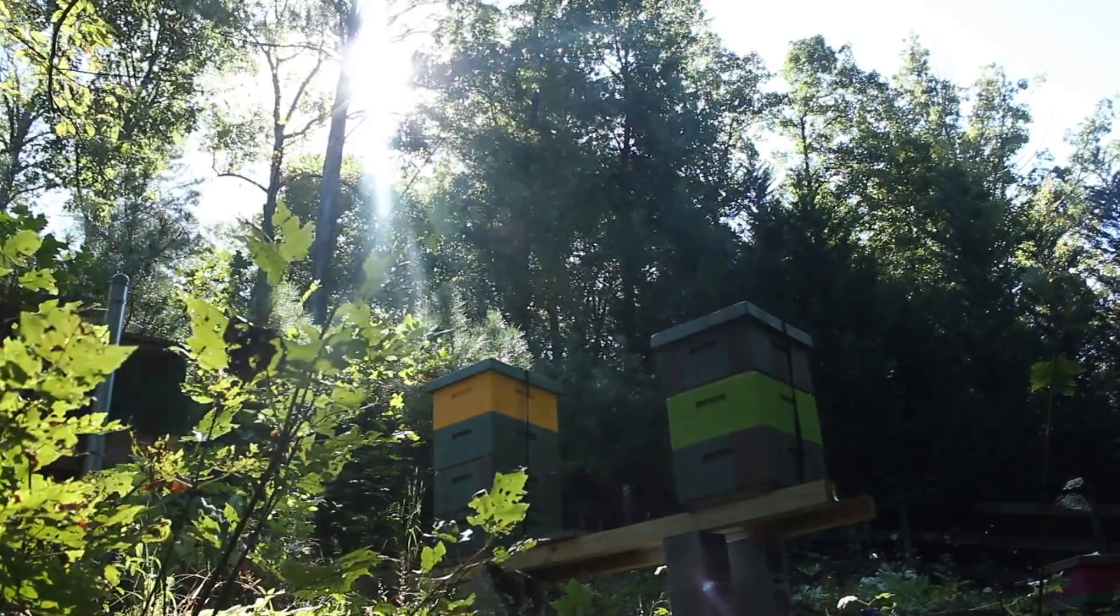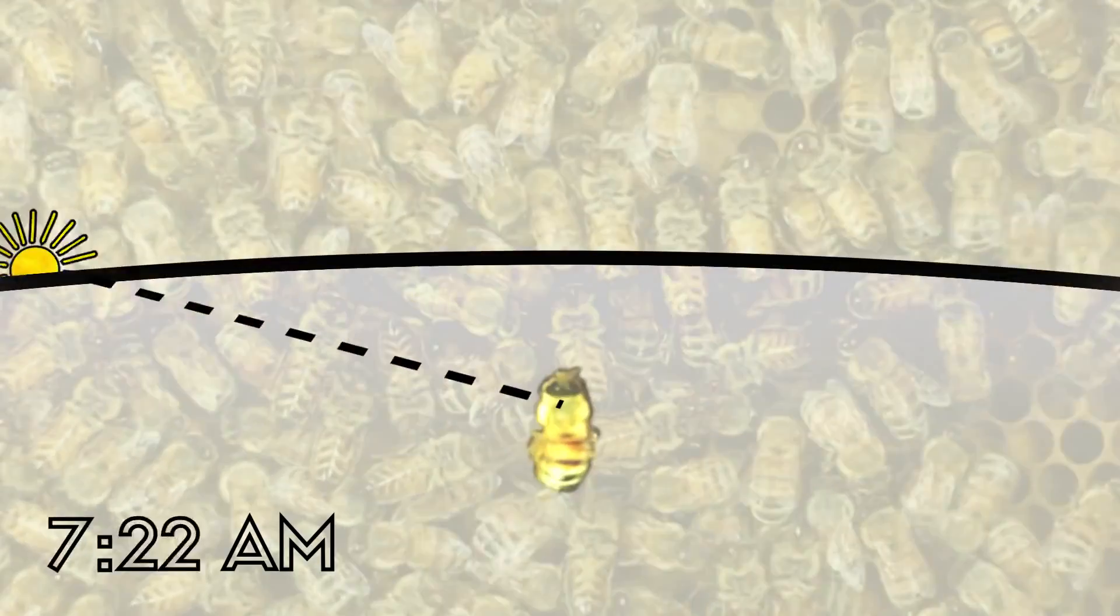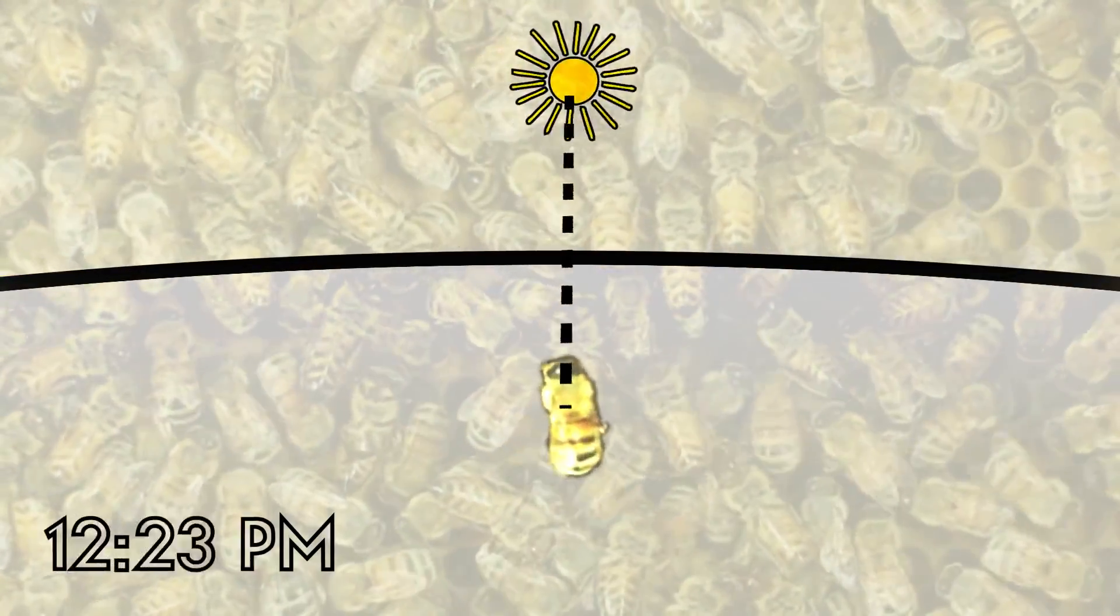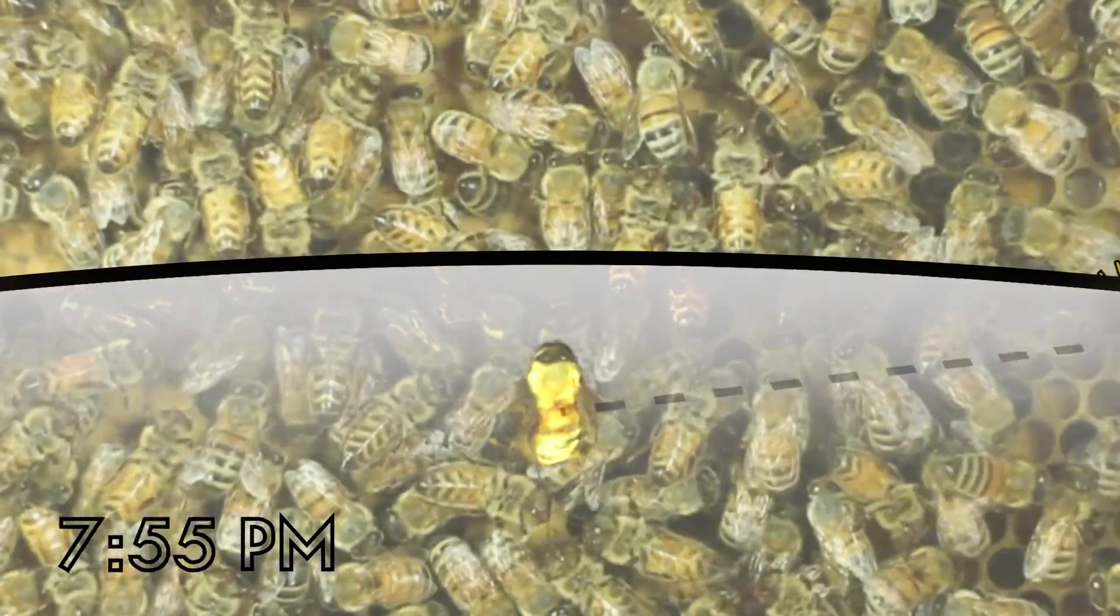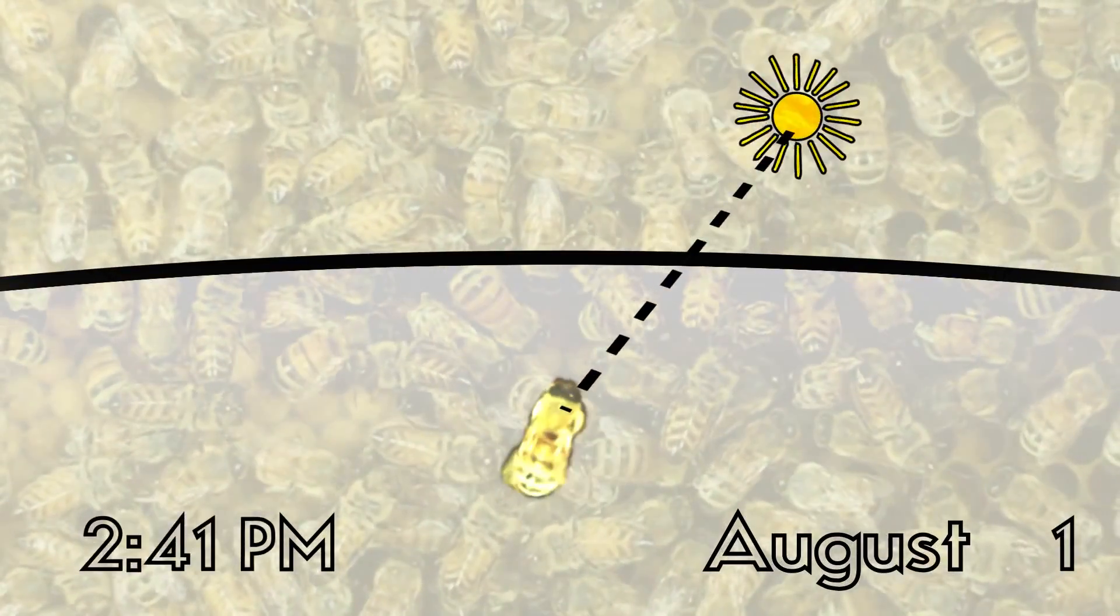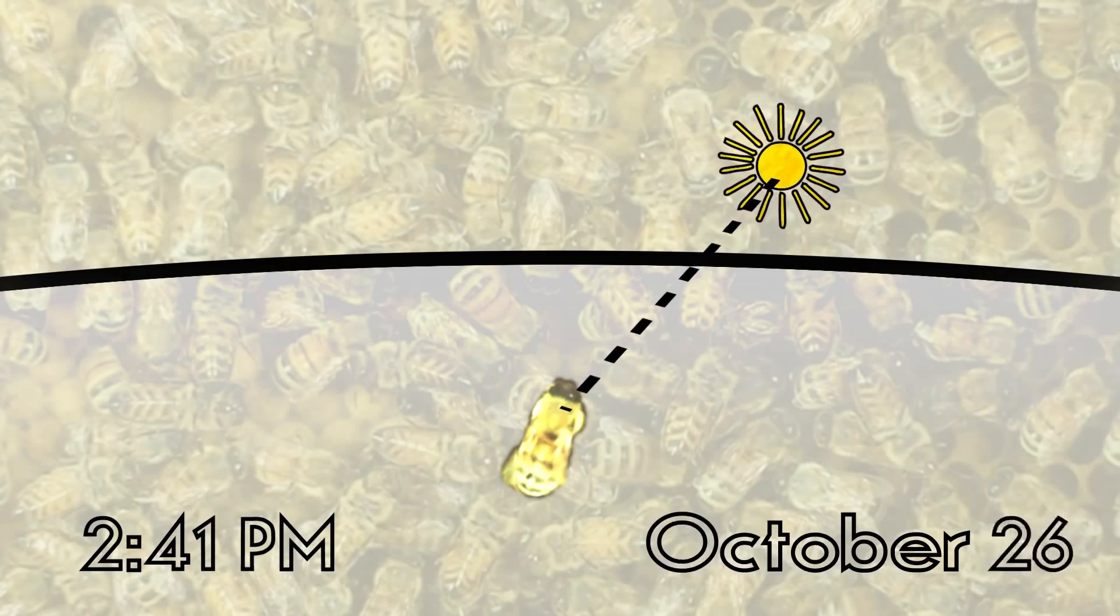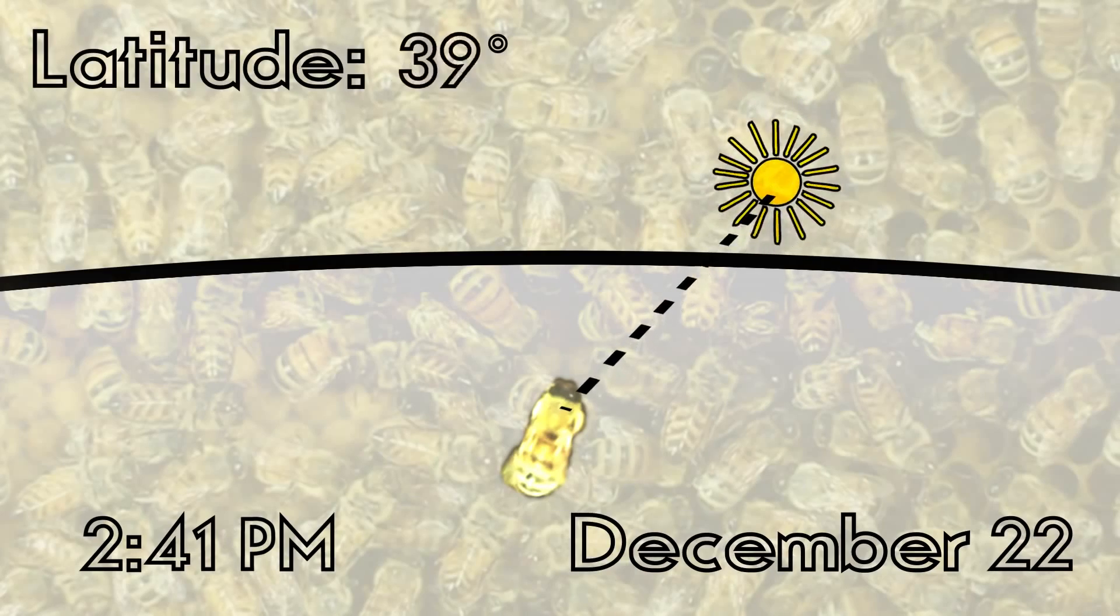In addition to this solar compass, bees possess a finely tuned internal clock. This clock is accurate enough for the bees to constantly estimate the new position of the sun as it travels across the sky. In this way, a honeybee can know the current orientation of the sun even after spending many hours within a dark hive. They can even take into account changes in seasons or latitudes.